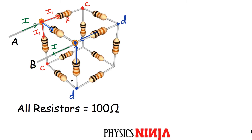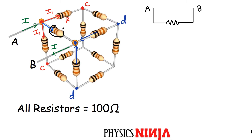We've already simplified this quite a bit. Now we're going to flatten the network. Between points A and B, I see that A breaks down into three different resistors, and A is connected directly to B through one resistor right at the top. So between points A and B, I have just a single resistor.